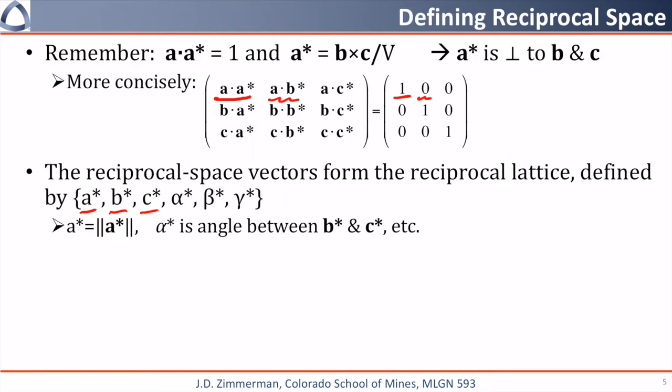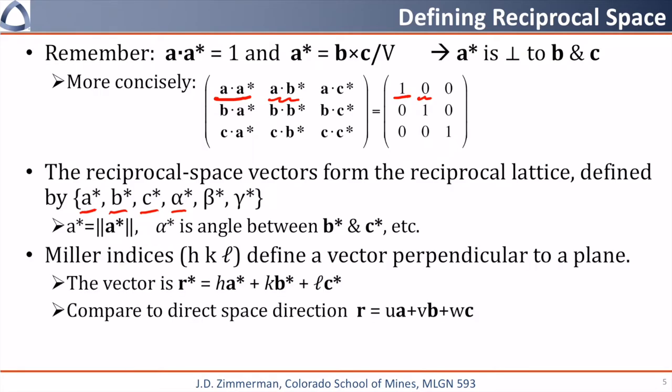The Miller index, which we denote as h, k, l in round brackets, is built from the basis components of the reciprocal space lattice.